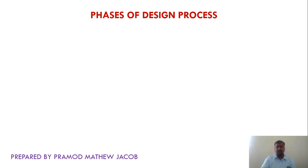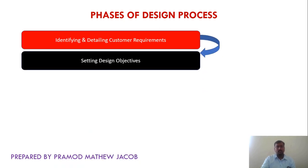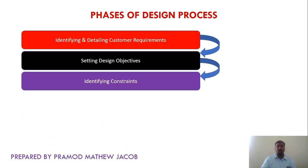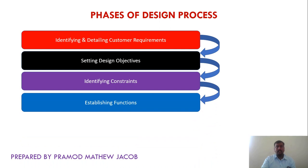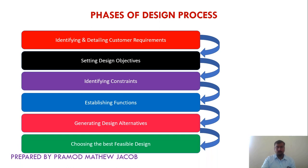The typical design process consists of six phases. The first phase is identifying and detailing customer requirements. The next one is setting the design objectives, then identify the various constraints, then establish the functions, generating design alternatives, and finally choosing the best feasible design. Let's understand what activities are carried out during each of these phases.